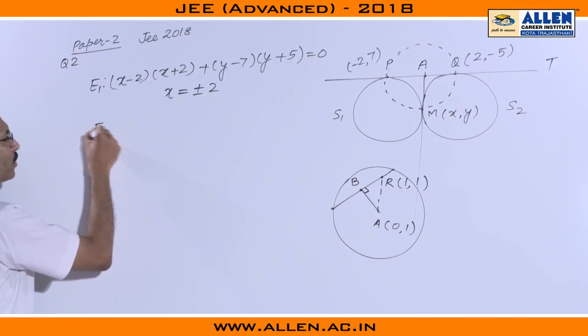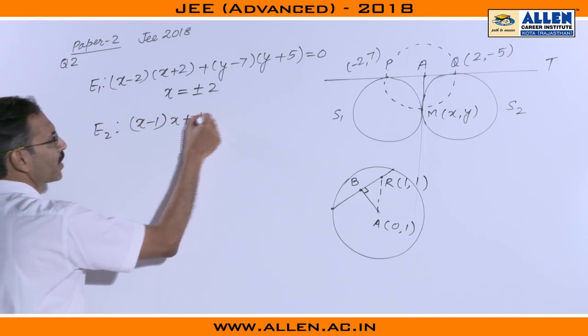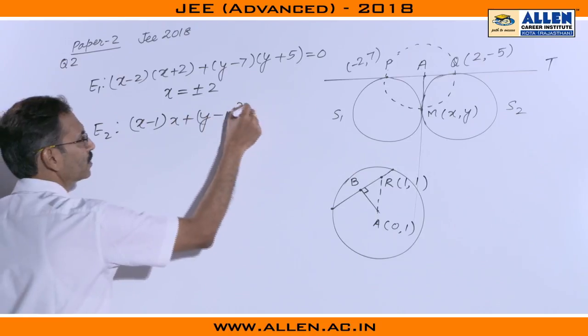Therefore the locus E2 will be x minus 1 into x minus 0 plus y minus 1 into y minus 1 equals to 0.